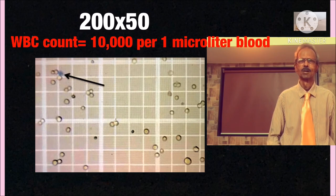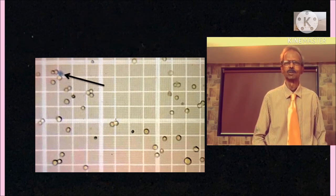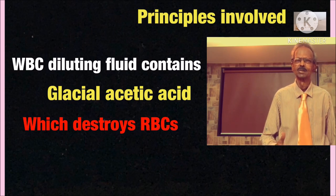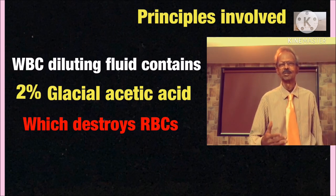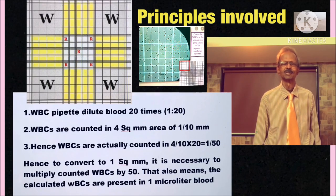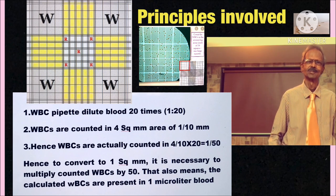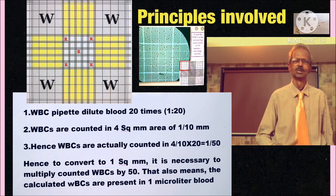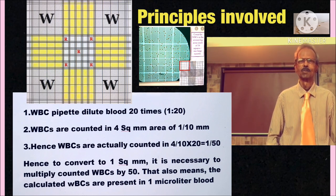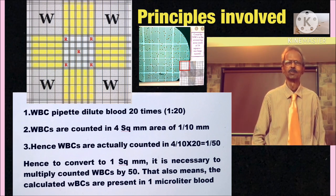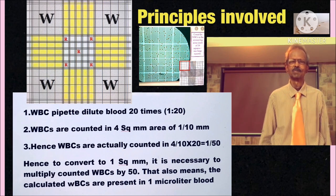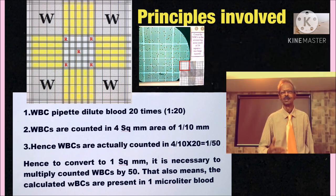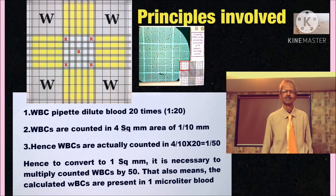The principles involved in WBC count are: First all interfering RBCs are destroyed by 2% acetic acid. WBC pipette dilutes blood 20 times. Cells are counted in 4 square mm area in depth of 0.1 mm. Hence actually cells counted are in 1 divided by 2.5 cubic mm area. Hence it is necessary to multiply counted cells by 50 to get WBC count per 1 cubic mm which is equal to 1 microliter blood.